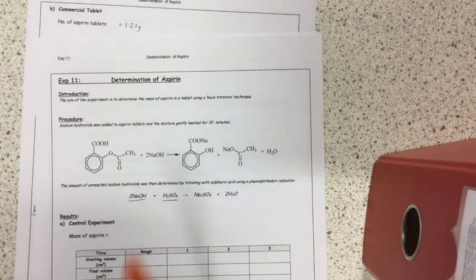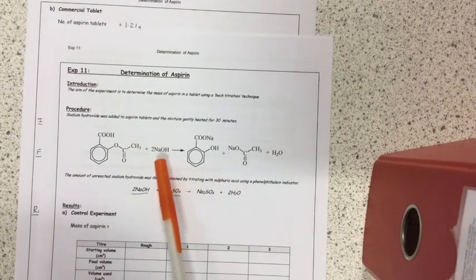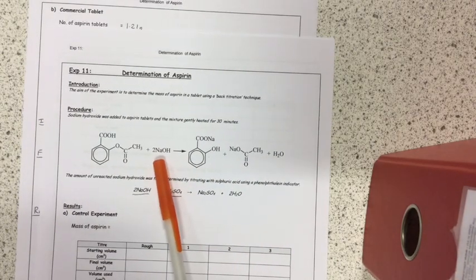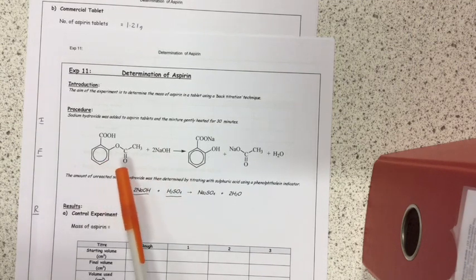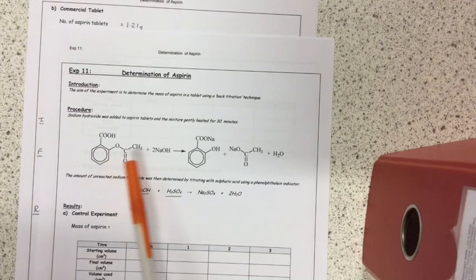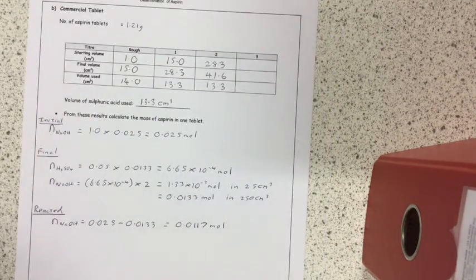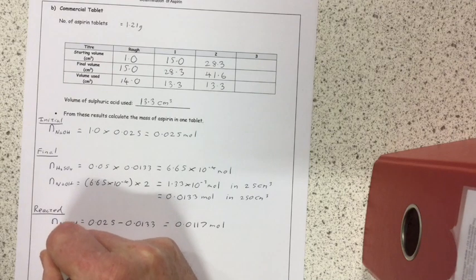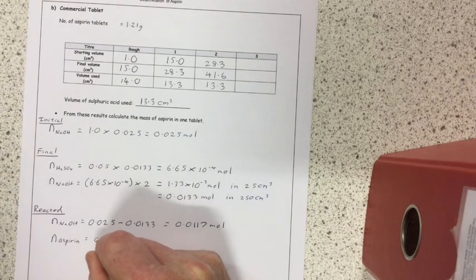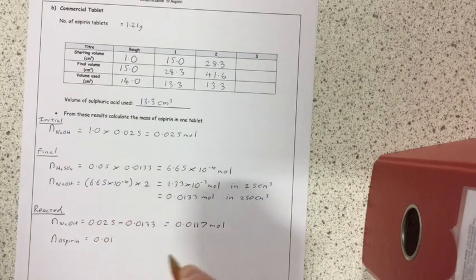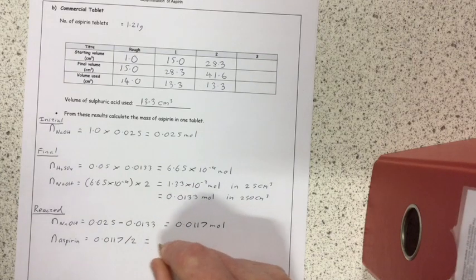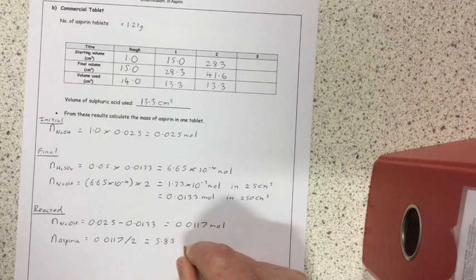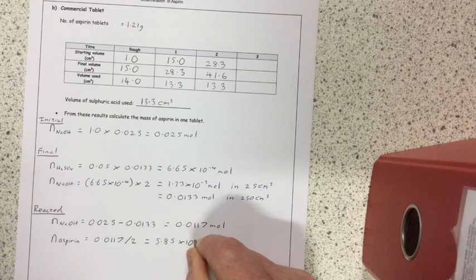So, again, if we look back at the balanced equation, we know how many moles of sodium hydroxide reacted, and we see that 2 moles of that will react to 1 mole of aspirin, so the number of moles of aspirin will be half the number of moles of the sodium hydroxide. So, the number of moles of aspirin is 0.0117 divided by 2, which equals 5.85 times 10 to negative 3 moles.